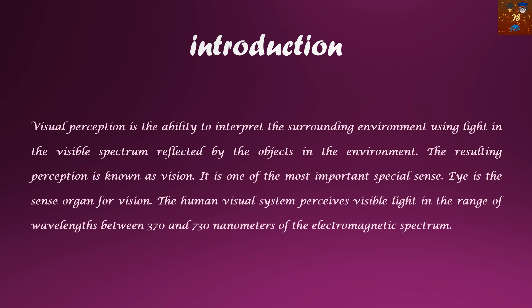Regarding the introduction, visual perception is the ability to interpret the surrounding environment using light in the visible spectrum reflected by objects, and whatever we see in our environment can only be seen with the help of the eye.